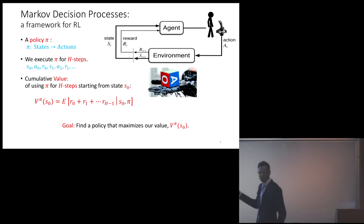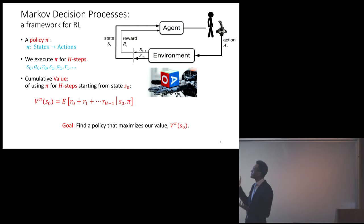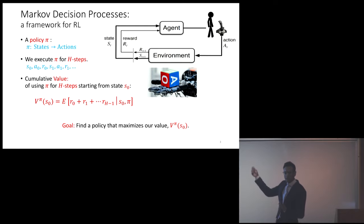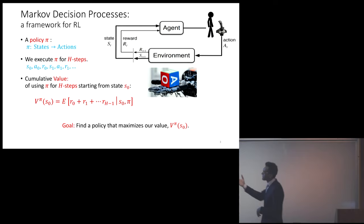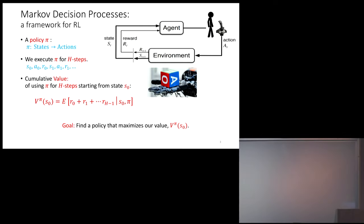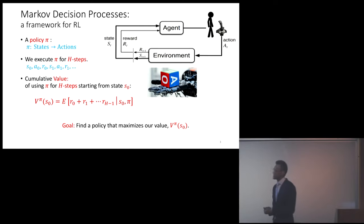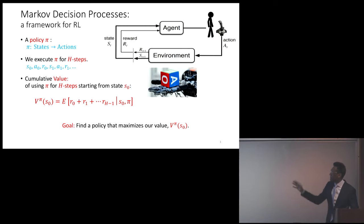The problem of interactive learning is increasingly fundamental to many areas in society and technology. A very natural paradigm to study this is the Markov decision process. An agent applies some action A_t to the world, manipulating the environment, and the state transitions to a new state. A policy is a mapping from states to actions; given any policy, it induces some distribution over states, and the goal is to maximize some measure of long-term reward in H steps starting from some given state S0.